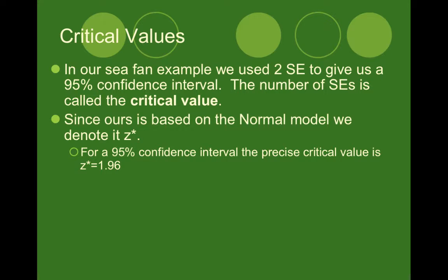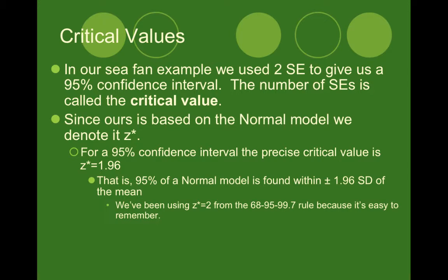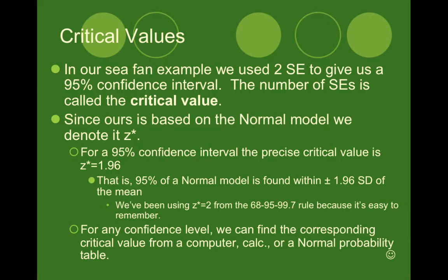We make sure we know it's a critical value because it gets a little asterisk at the top of the Z. For a 95% confidence interval, the precise critical value is actually 1.96 — it's not exactly two, because the normal model is an estimate, so it's approximately two. But if we want to be more precise, it's going to be 1.96. From here on out, we're going to use 1.96 as our critical value for 95% confidence, meaning that 95% of the normal model is found within 1.96 standard deviations of the mean. For any confidence level, we can find the corresponding critical value from a computer, calculator, or Z score table.